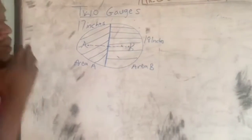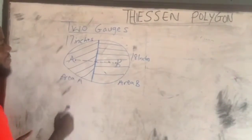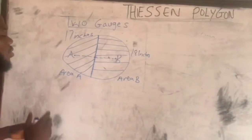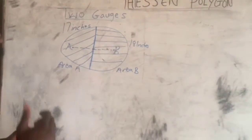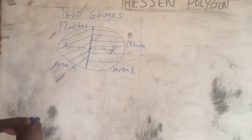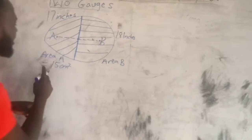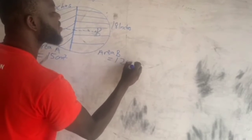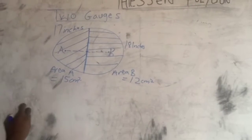Area A or area B may be given in the question, but if not given, when we draw this on the graph sheet, complete boxes are counted as one, and those that take more than half of a box are also counted as one. Assuming area A gives us 15 centimeters squared and area B gives us 12 centimeters squared, we then find the average precipitation.